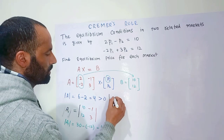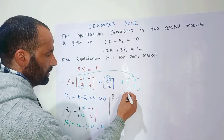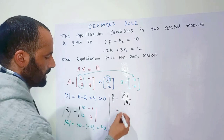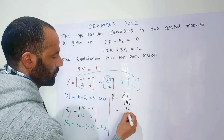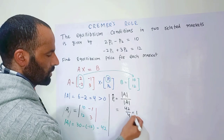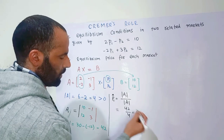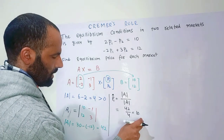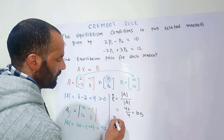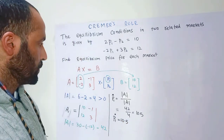The equilibrium price of p1 is equal to the determinant of the new matrix divided by the determinant of the coefficient matrix. That is 42 divided by 4, which comes out to be 10.5. So the equilibrium price of p1 is 10.5.